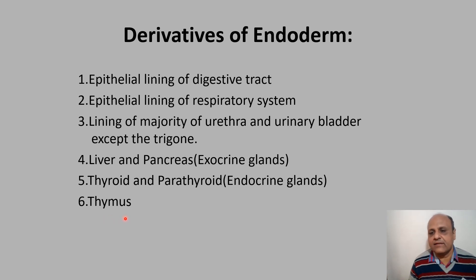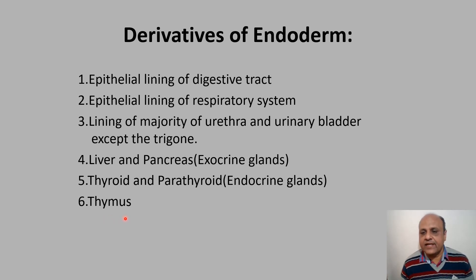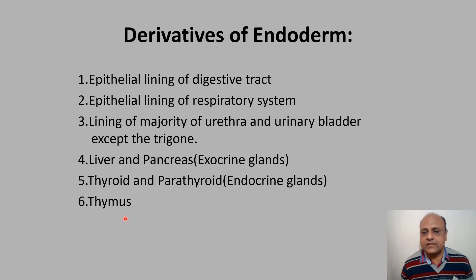So in summary, there are 5 derivatives of ectoderm, 7 derivatives of mesoderm, and 6 derivatives of endoderm. Remember: all musculature is derived from mesoderm except the musculature of the iris, which is derived from ectoderm.